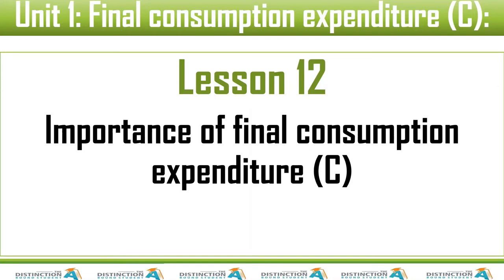Lesson number 12: the importance of final consumption expenditure by the most important participant in the circular flow, which is all of us. None of this is done for anything else — everything is done for us as households, as people. A computer is not there for anything else but for us human beings. Even if a company is using a computer, they are using it so that the consumer can be satisfied.